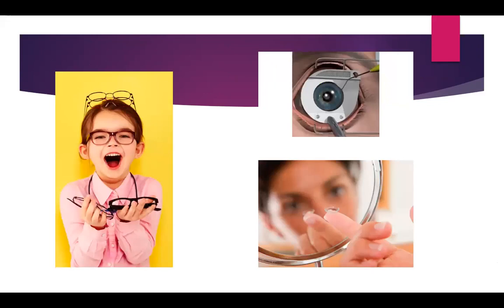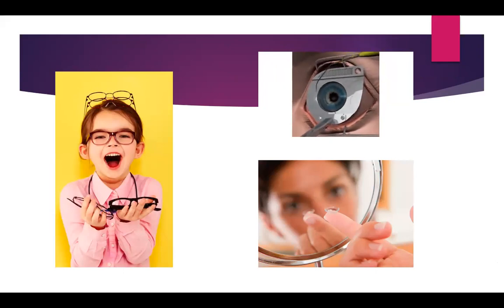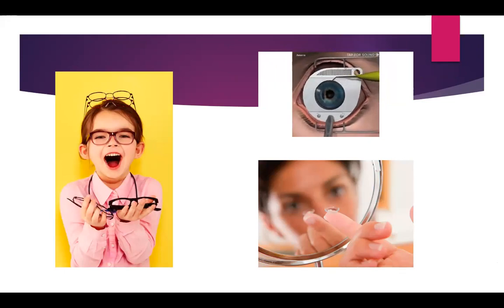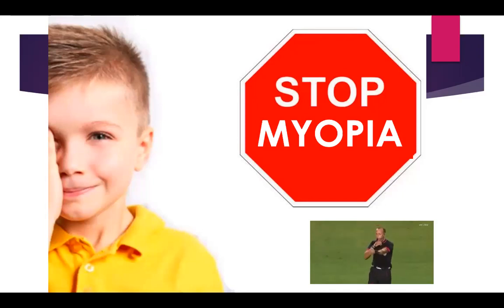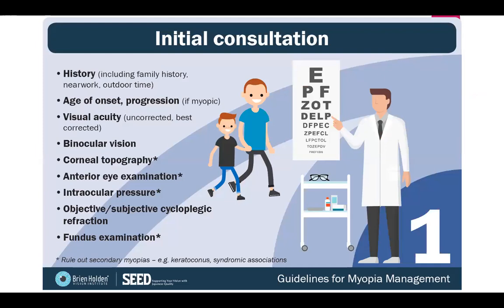What we really want to do is try to correct myopia. We can do that with glasses, contact lenses, or refractive surgery. But what's more interesting is actually stopping myopia progression, not just correcting it. At an initial consultation, you take a family history, talk about near work, how much time is spent outdoors, age of onset or progression if they're already myopic. You also assess visual acuity, binocular vision, corneal topography, intraocular pressure, and look at the front of the eye.